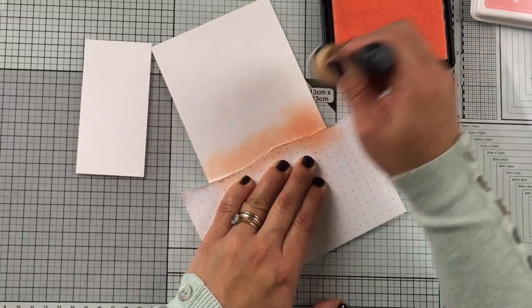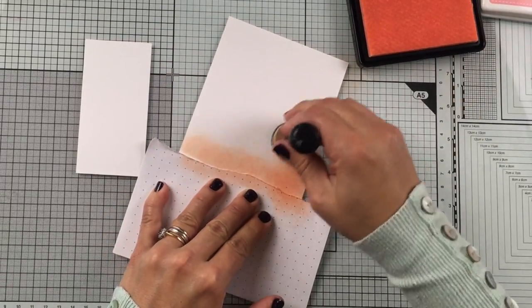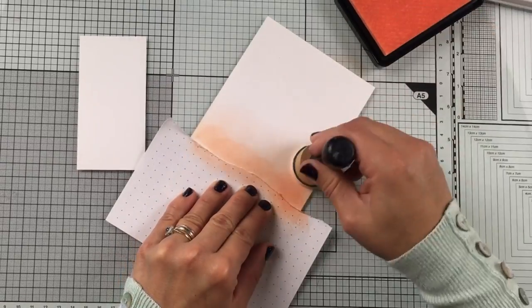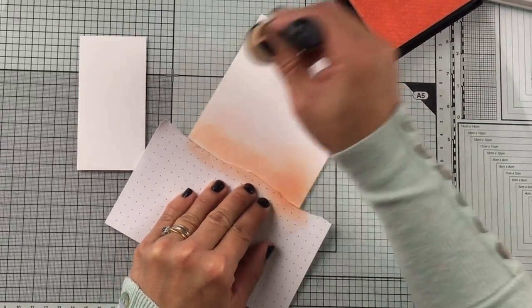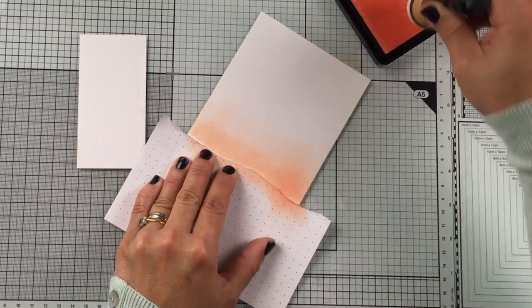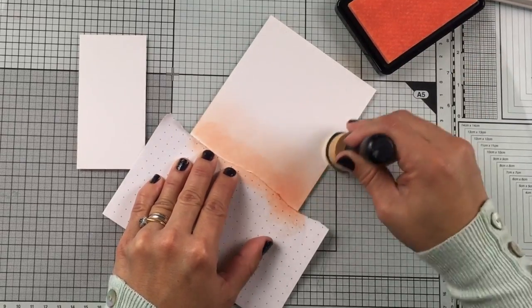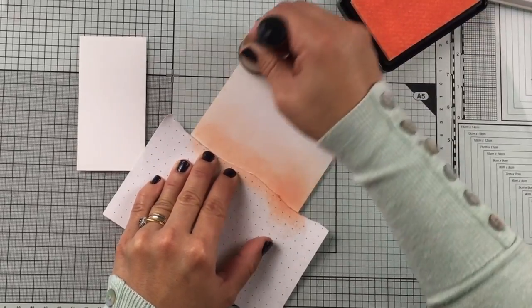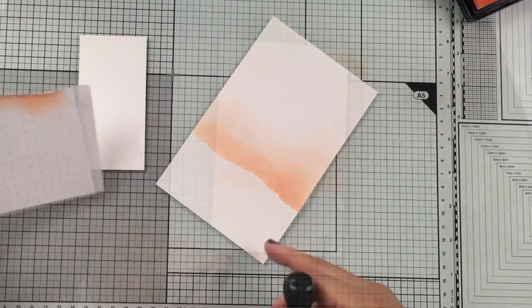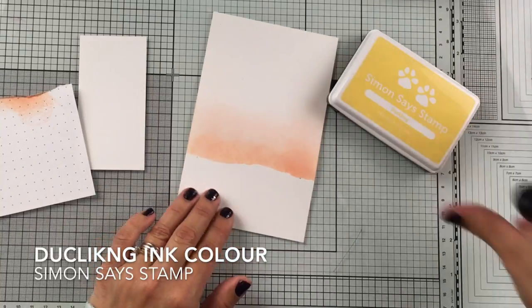This cardstock is not that great for applying distress inks or inks like that, so if you get for example Bristol paper or another smooth cardstock you're not going to have these troubles. But I really want to use this paper which is called Whisper White cardstock because it's just beautiful for stamping and I'm planning to stamp that large sentiment from Hello Winter Stamp Set here. I'm just thinking the future of this card and I really want to use this cardstock, it's just me being a little bit stubborn.